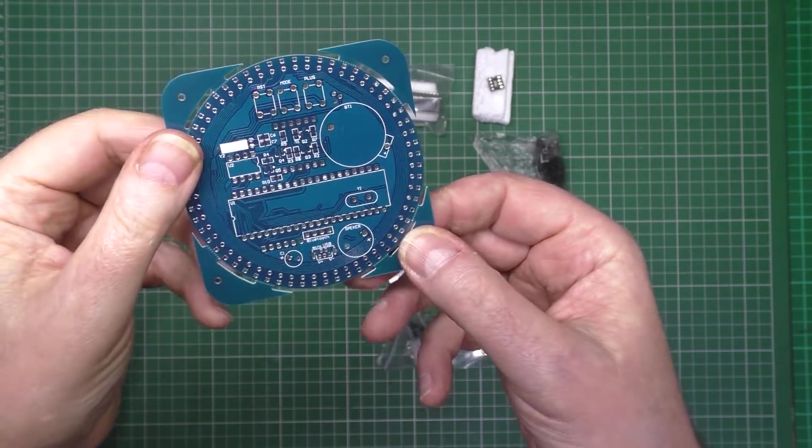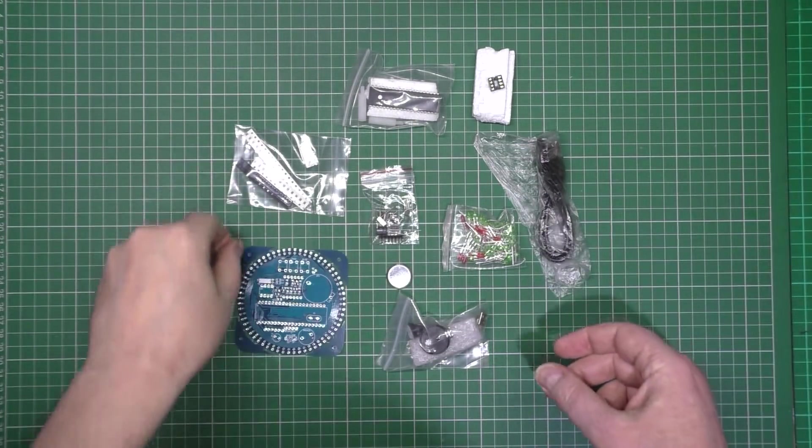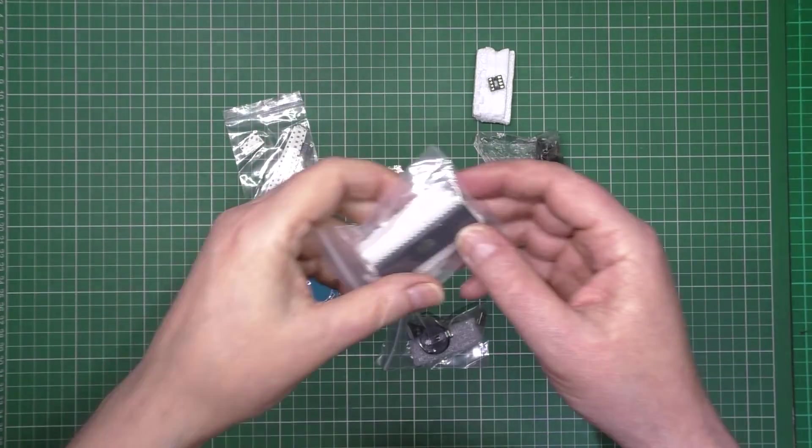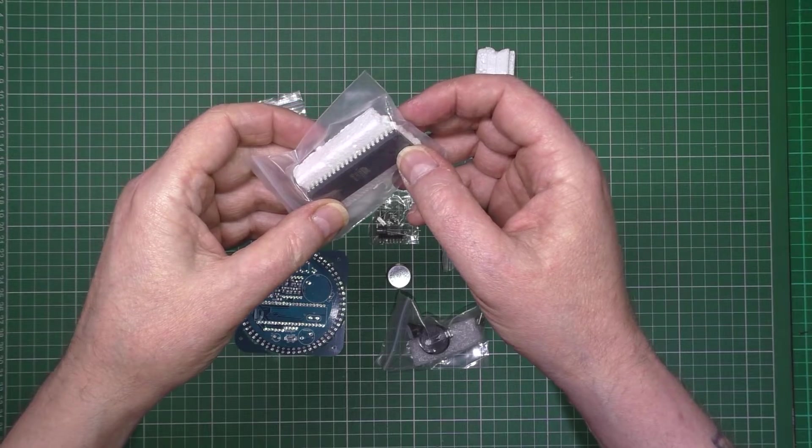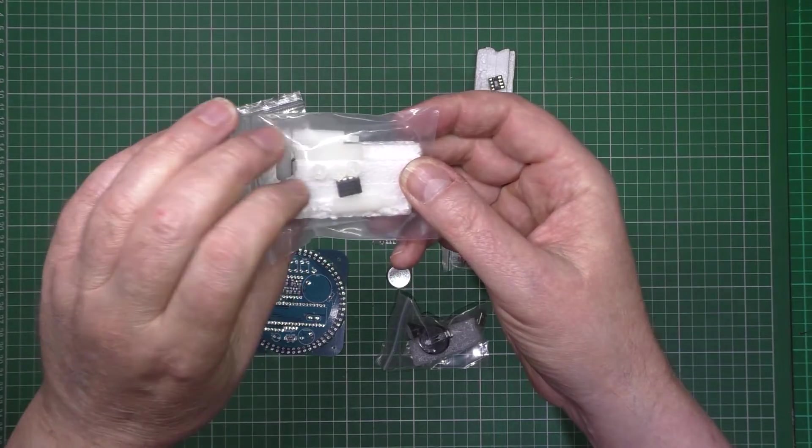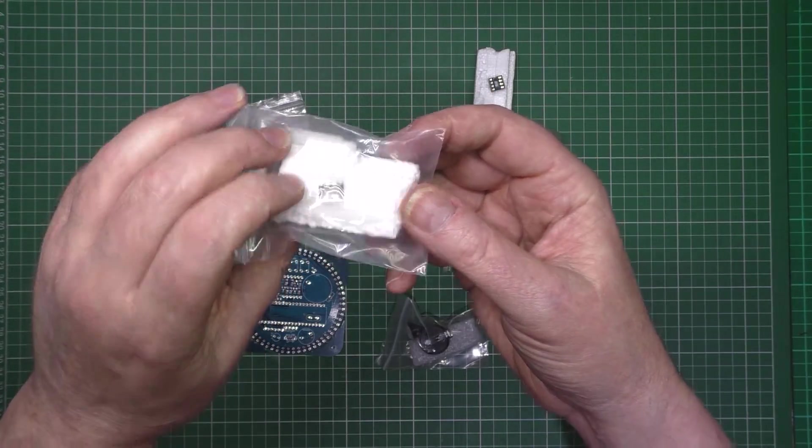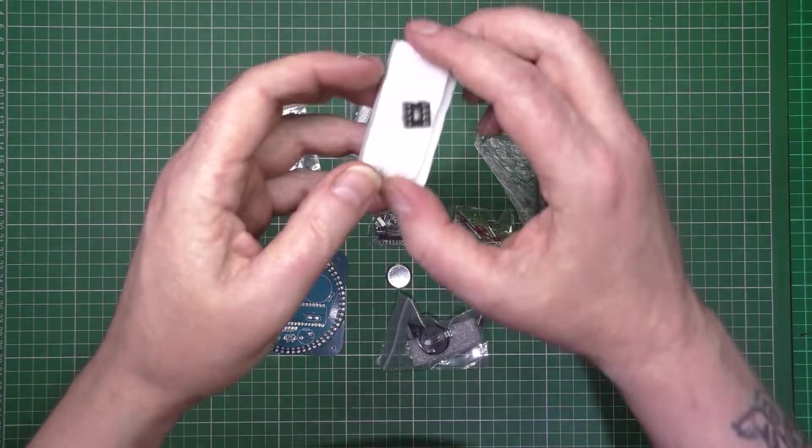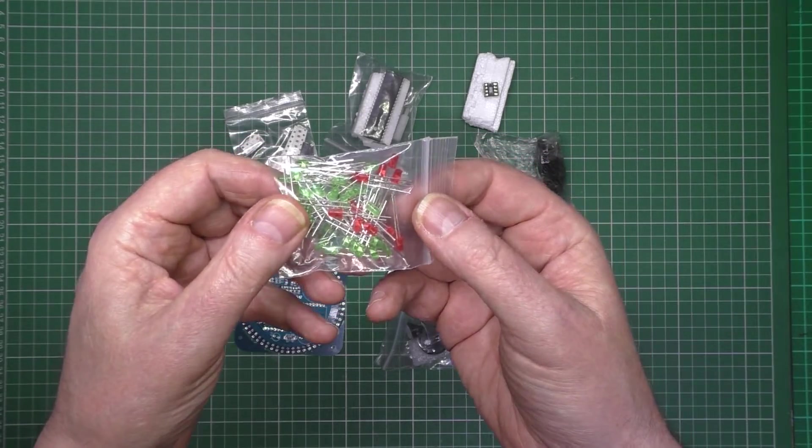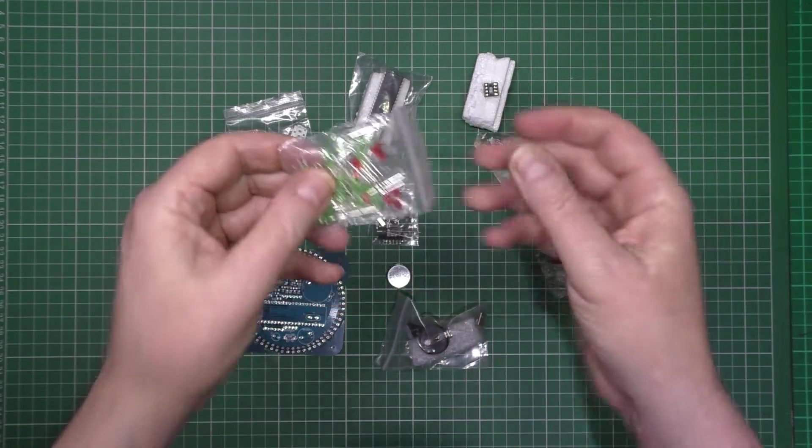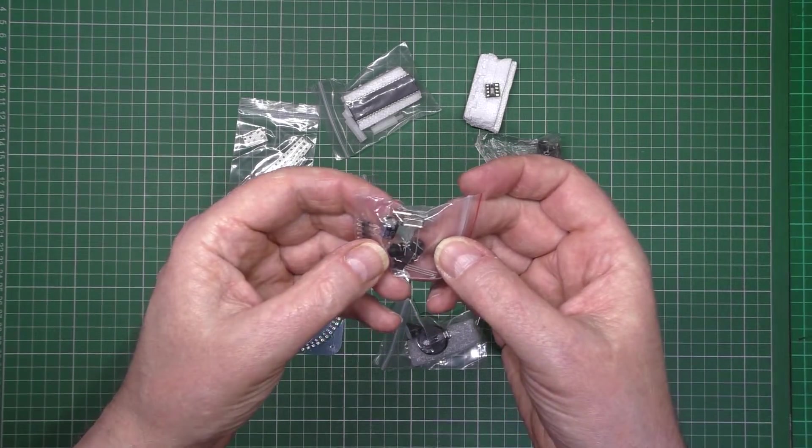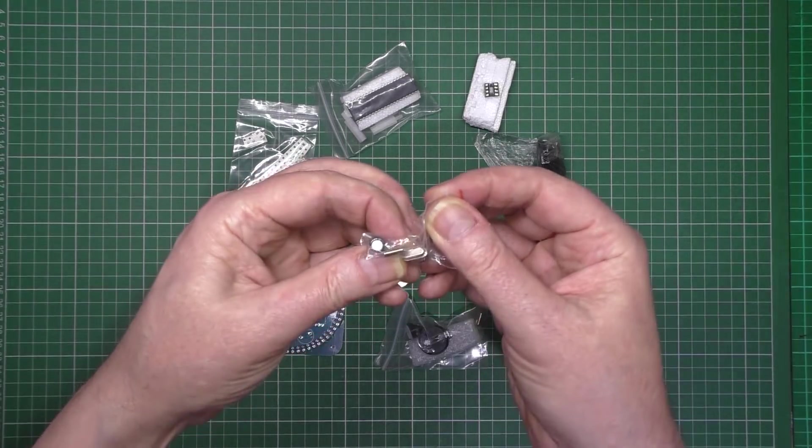So you get that which is the PCB and you get loads of bags of resistors. You get I think it's an Atmel 80, I can't read it, I haven't got my glasses on, I'm blind. So you get that and also another IC, I don't know what the hell that one is. You get the holders. You get a shitload of LEDs. You get capacitors, transistors, there's a crystal in there as well.